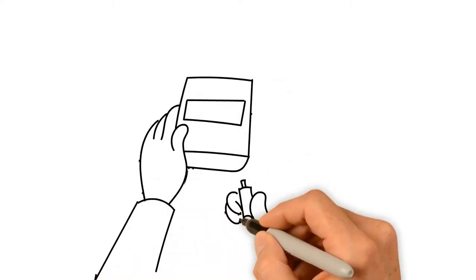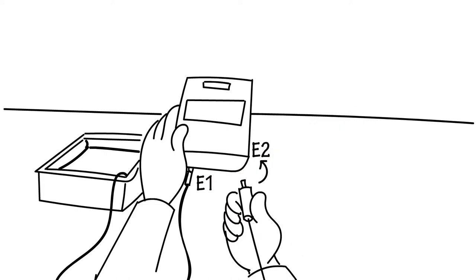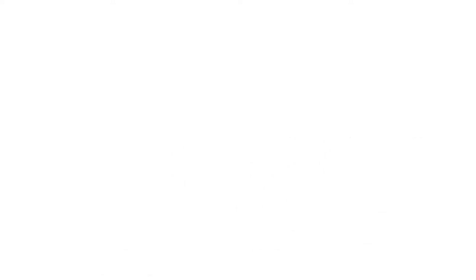Step 4: Plug electrode cords into connectors E1 and E2 at the back panel of the main control unit.